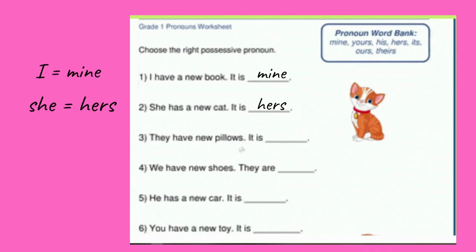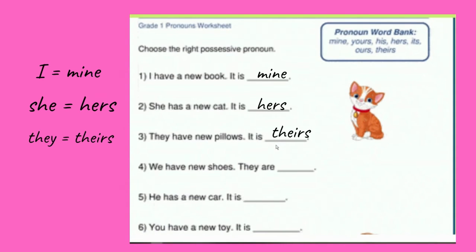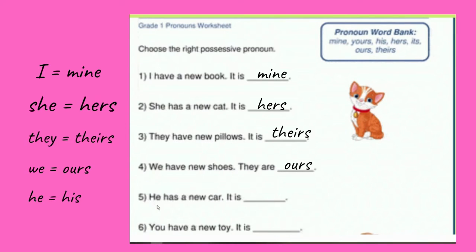Number three: 'They have new pillows. It is ___.' Number four uses the subject pronoun 'we,' so with we we use ours — 'They are ours.' Number five: 'He has a new car. It is ___.' The subject pronoun is 'he,' and with he we use his — 'It is his.'